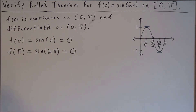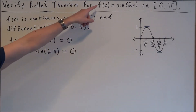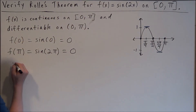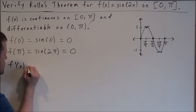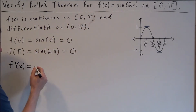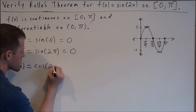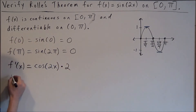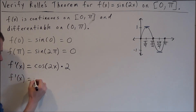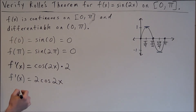To verify that Rolle's theorem applies, we find the derivative of our function. Using the chain rule, the derivative of sin(2x) gives us cosine(2x) times the derivative of the inside, which is 2. So the derivative is f'(x) = 2cos(2x).